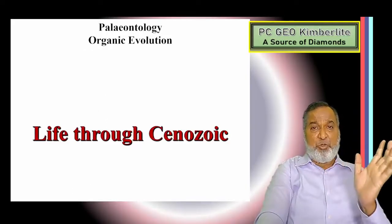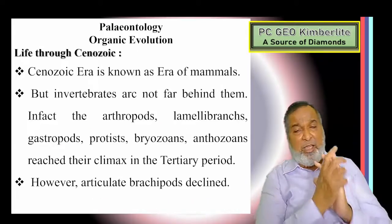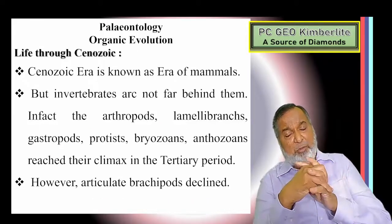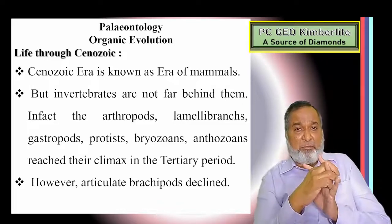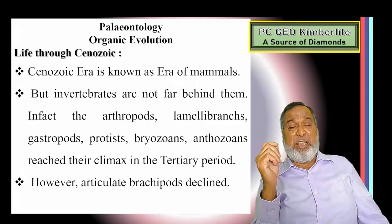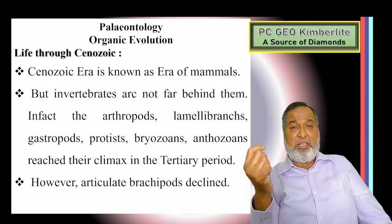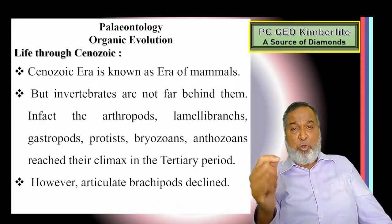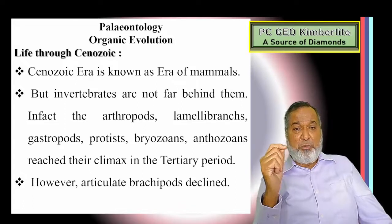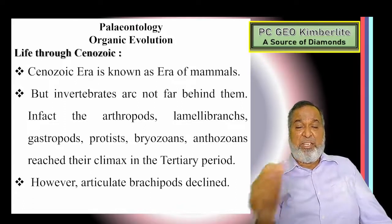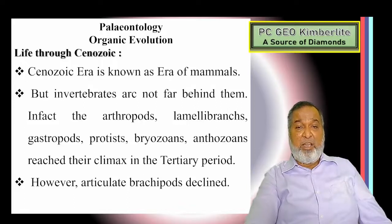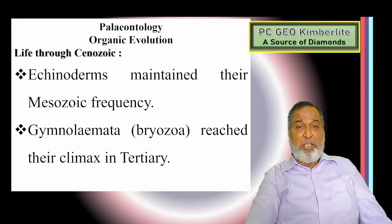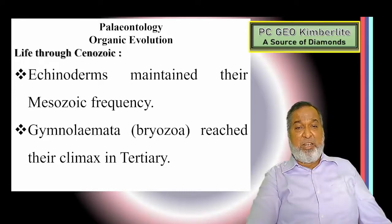That completes the Mesozoic, characterized by the dominance of reptiles and ammonoids. Now we come to the Cenozoic era, which is called the era of mammals, but the invertebrates are not far behind. In fact, arthropods, lamellibranchs, gastropods, protists, bryozoans, and anthozoans reached their climax in the Tertiary. However, articulate brachiopods declined. Echinoderms maintained their Mesozoic frequency. Gymnolaemata — the Biosar — reached their climax in the Tertiary.